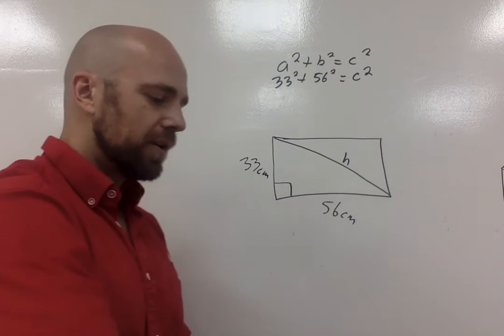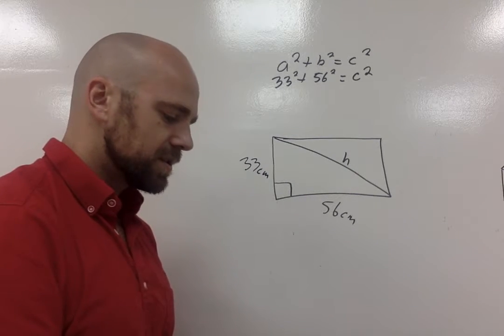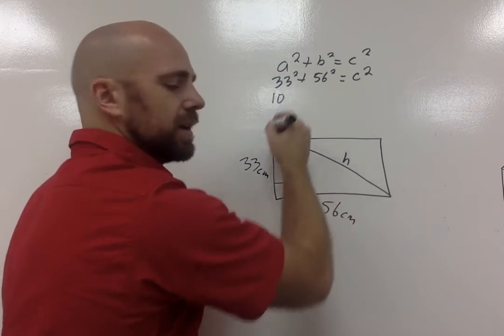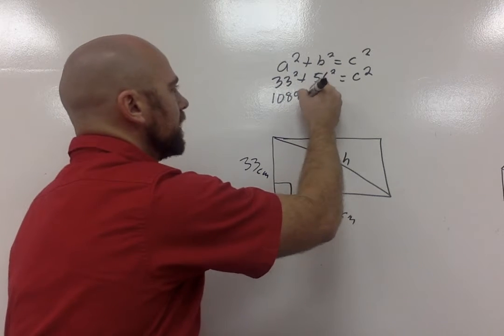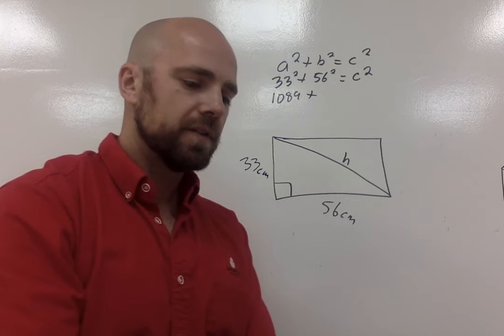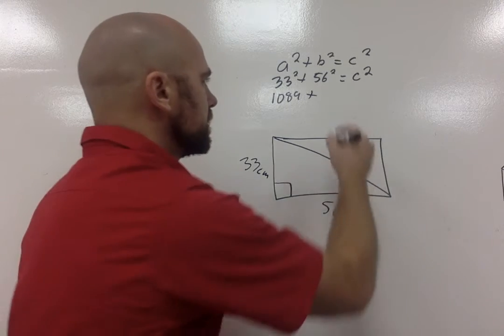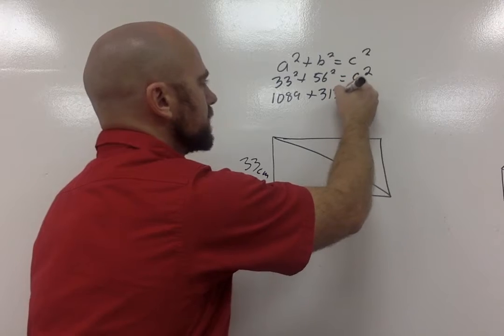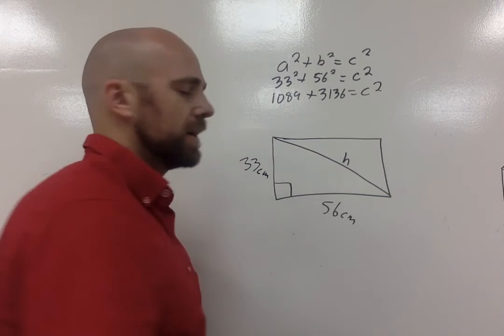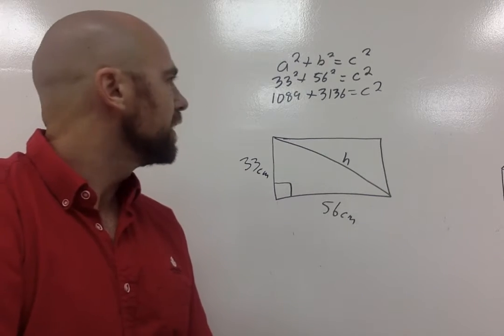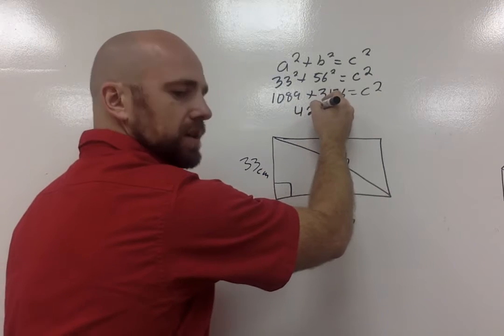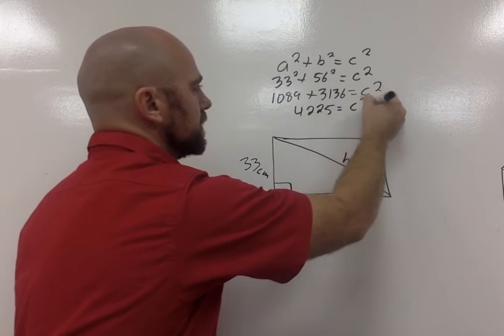Alright, so I don't have these squares memorized, so I'm actually going to have to use my calculator. So 33 squared is 1,089 plus, we've got 56, 56 times 56 gives me 3,136. Alright, so and that's all going to equal C squared. So when I add these together, plus 1,089, I get 4,225 equals C squared.